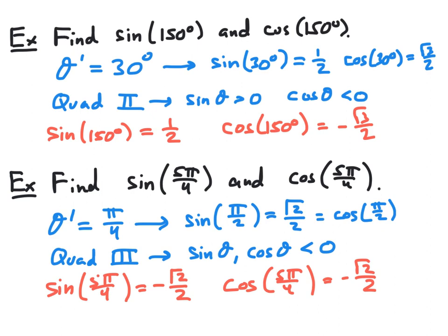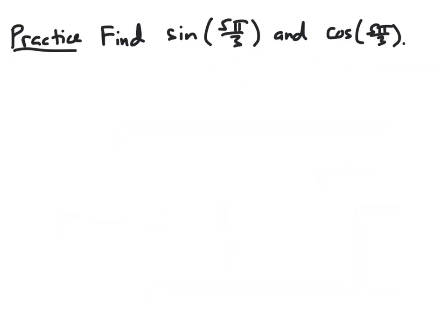I've just noticed that here in blue, I wrote the sine and cosine of pi over 2, and of course that should have been pi over 4 in both the sine and cosine functions. If you'd like some additional practice with this, try to find the sine and cosine of 5 pi over 3. Recall that in a previous example, we found that the reference angle for 5 pi over 3 was pi over 3, and that this angle was in quadrant 4. The answer will appear in just a few seconds.